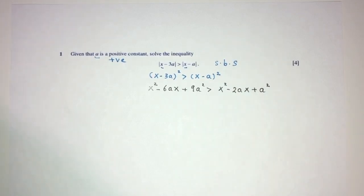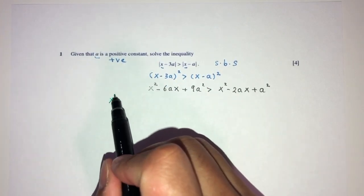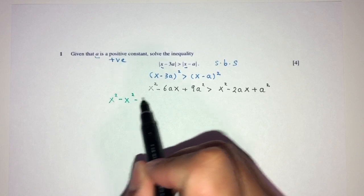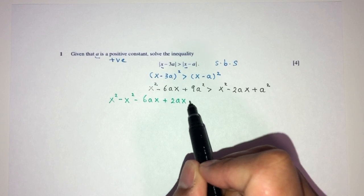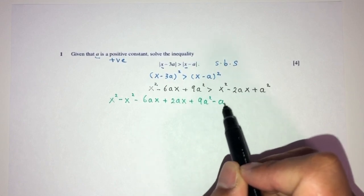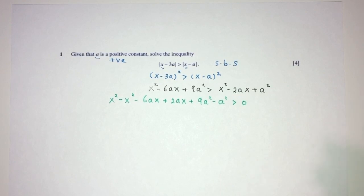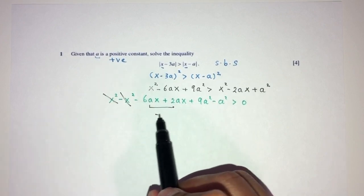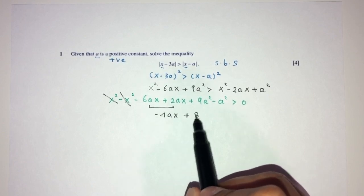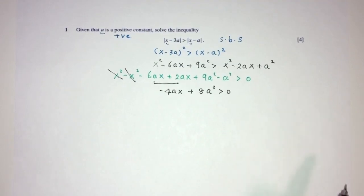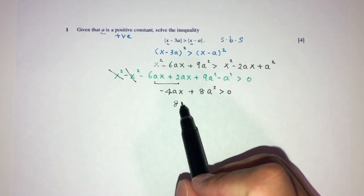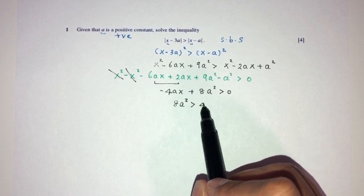Now we have to simplify, so send everything to one side. So you will have X squared minus X squared minus 6AX plus 2AX plus 9A squared minus A squared is more than 0. Solving means to find the value of X, not A. This will cancel out, and this will become minus 6 plus 2 will be minus 4AX plus 8A squared. Now we can rearrange, we can send this over here, you will have 8A squared more than 4AX.